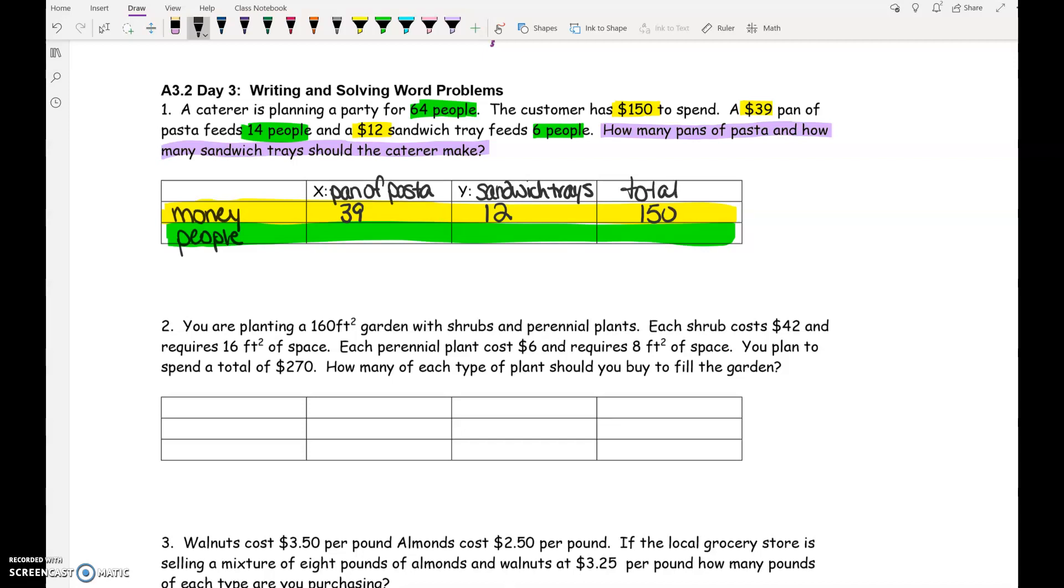Now let's turn these three numbers into an equation. One pan of pasta is $39. How would you figure out how much two pans of pasta is? Add 39 plus 39 or take 39 times 2. Three pans of pasta would be 39 times 3. So we're doing 39 times the number of pans of pasta. That's our X. We're doing $12 times the number of sandwich trays. And when we add those together, it's going to total $150.